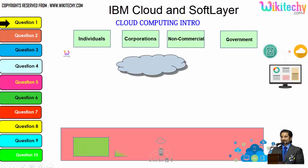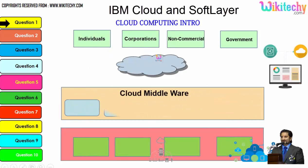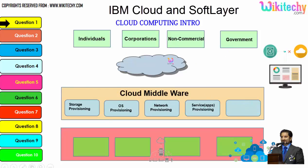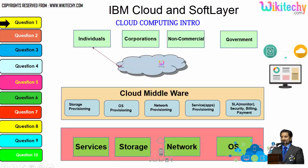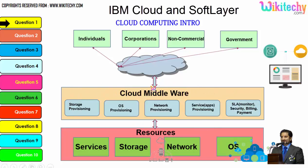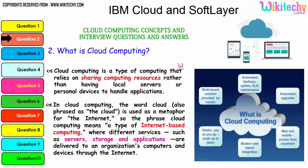There are different types of users — individuals, corporations, non-commercial people, and government. Any of these users can access services, storage, networks, or operating systems via cloud middlewares. These are specialized software provided by the cloud service provider to access resources. This is how the cloud computing architecture works. The definition: cloud computing is a type of computing that relies on sharing computing resources rather than having local servers or personal devices to handle applications.